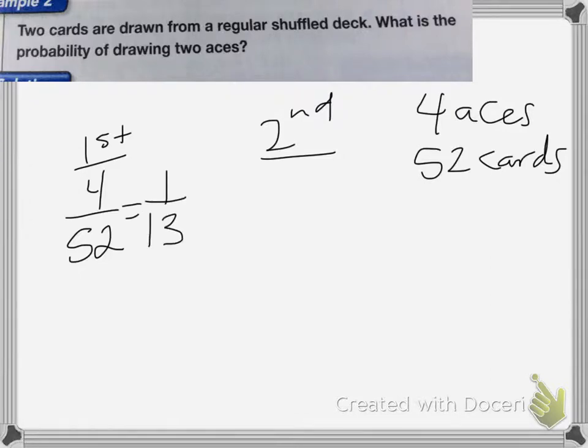The second draw, I have drawn one of those aces, so now there's only 3 aces left in the deck. And instead of being 52 cards, there's only 51 cards left. So the second draw, I have 3 out of 51 chances of drawing an ace, which is equal to 1/17.